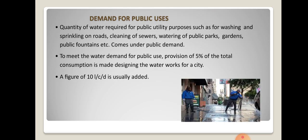Demand for public use includes various public purposes such as fountains in gardens, street washing, sprinkling water on roads, cleaning of sewers, and garden maintenance. To meet this requirement, a provision of about 5% of the total consumption is made for designing waterworks for a city, and about 10 litres per capita per day is usually added for public use demand.